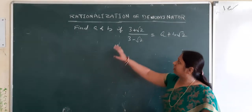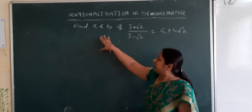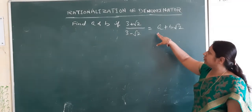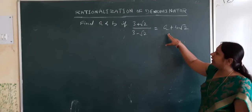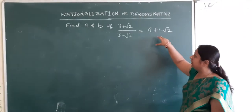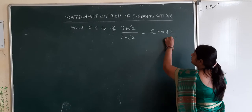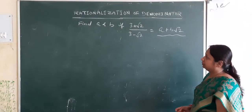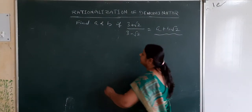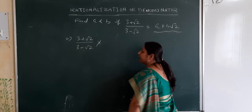Now let us see the application of rationalization. Here is an example: Find a and b if (3 plus root 2) divided by (3 minus root 2) equals a plus b root 2. We need to find the unknown values a and b. So we apply rationalization to the expression (3 plus root 2) by (3 minus root 2), and we must first find the rationalizing factor of the denominator.